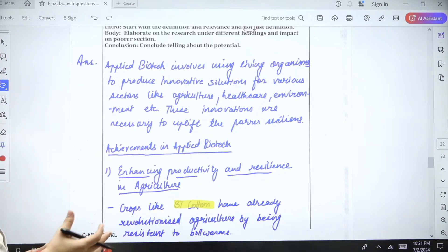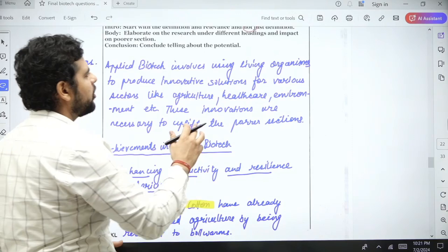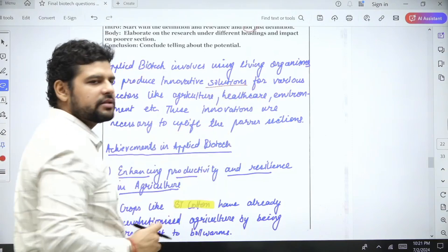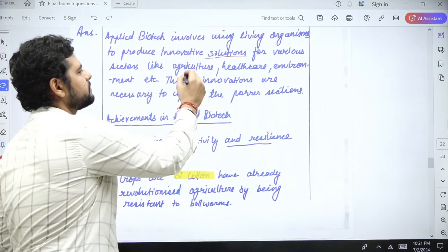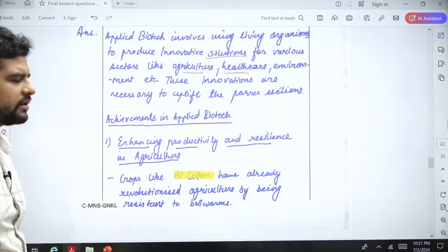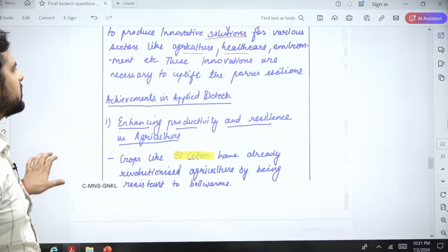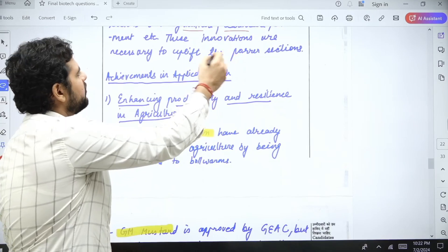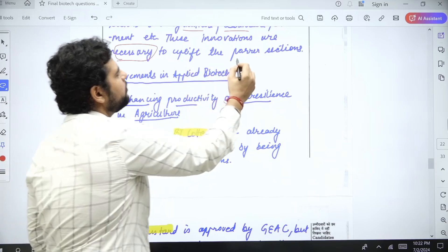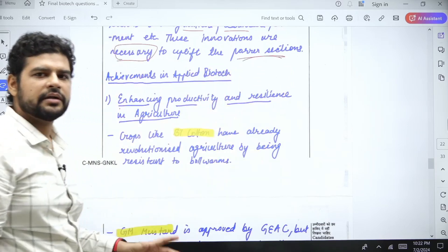Applied biotech: What is it? It means that living organisms are used to provide solutions for various issues like agriculture, healthcare, and environment. We'll see all the sections. Innovations are necessary to uplift the poorer section, so that is the point. This is how you can write a compact and effective introduction.